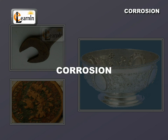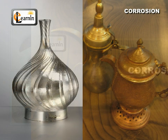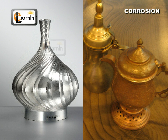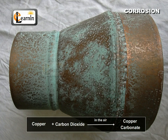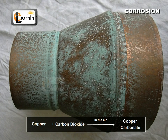In this video, we'll learn more about corrosion. When silver objects are exposed to air, they slowly turn black. Silver reacts with the sulfur in the air to form a coating of silver sulfide. The reaction of copper with moist carbon dioxide in the presence of air gives copper carbonate, which is a green coat formed on the copper substance when it loses its shiny brown surface.